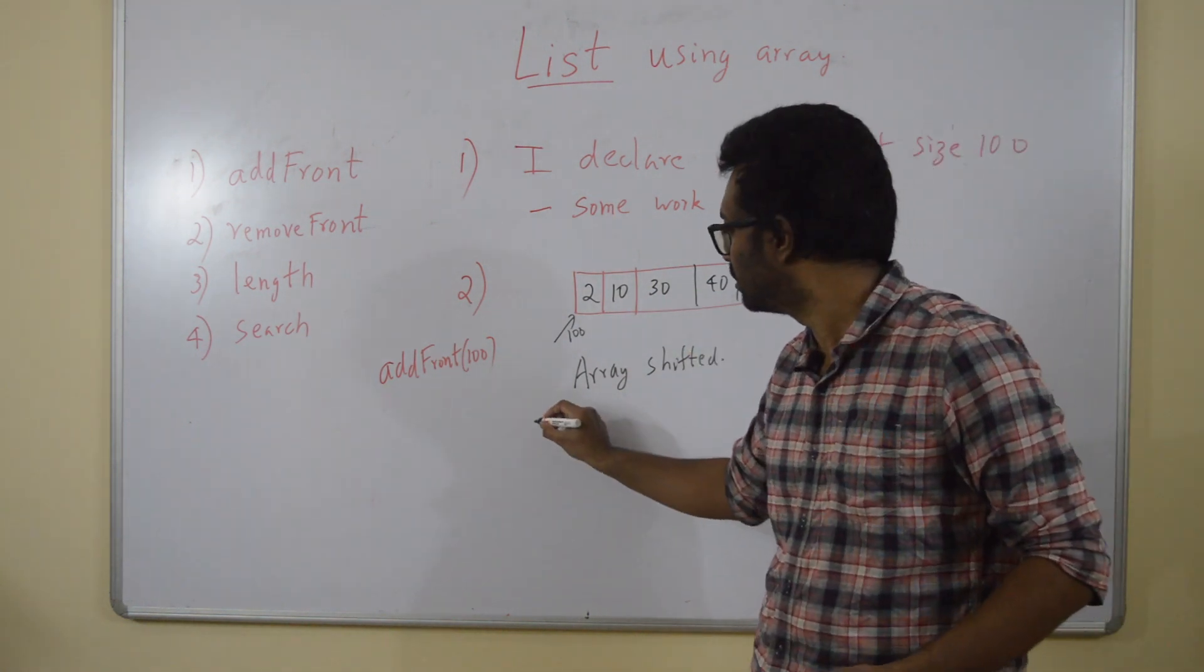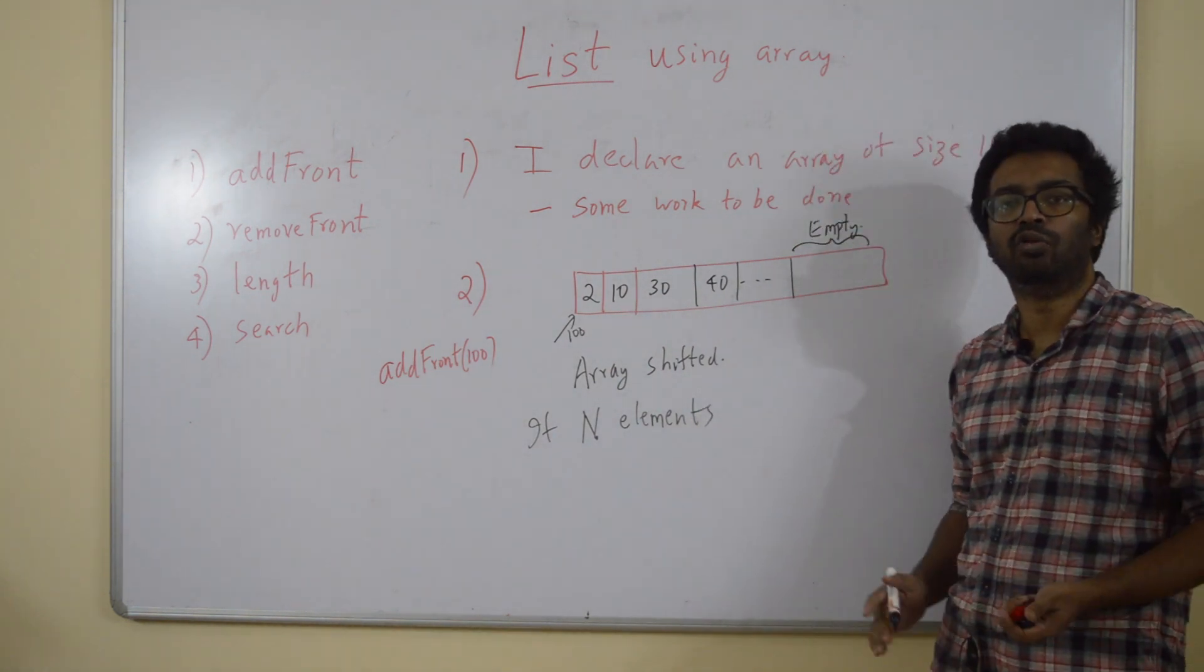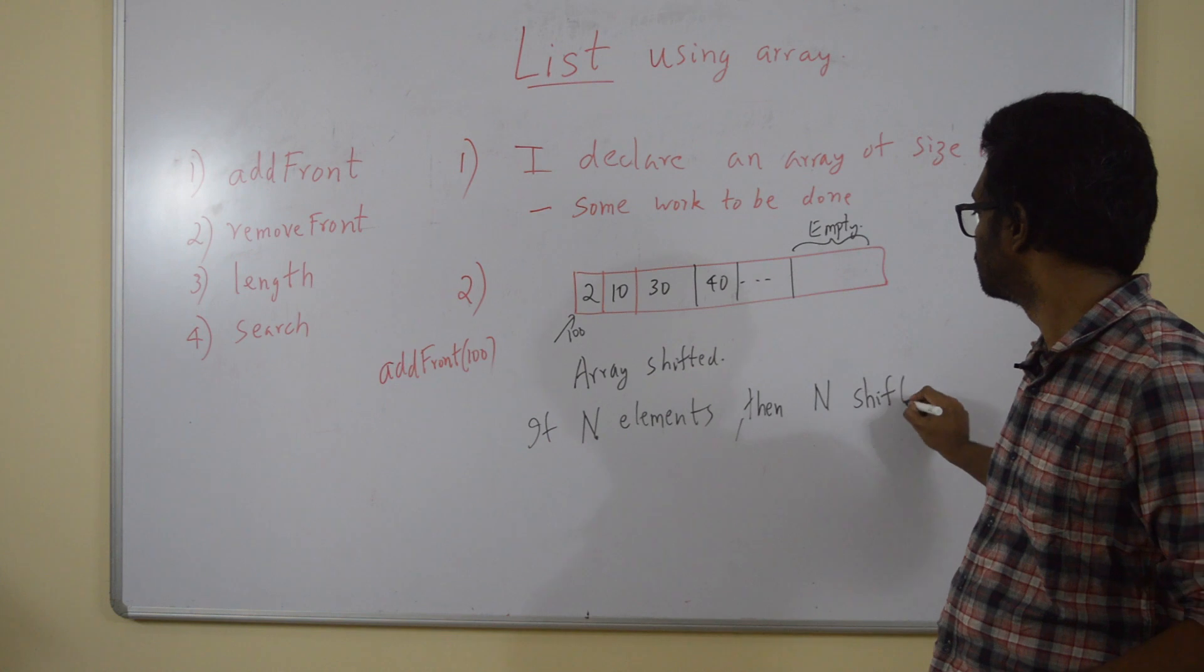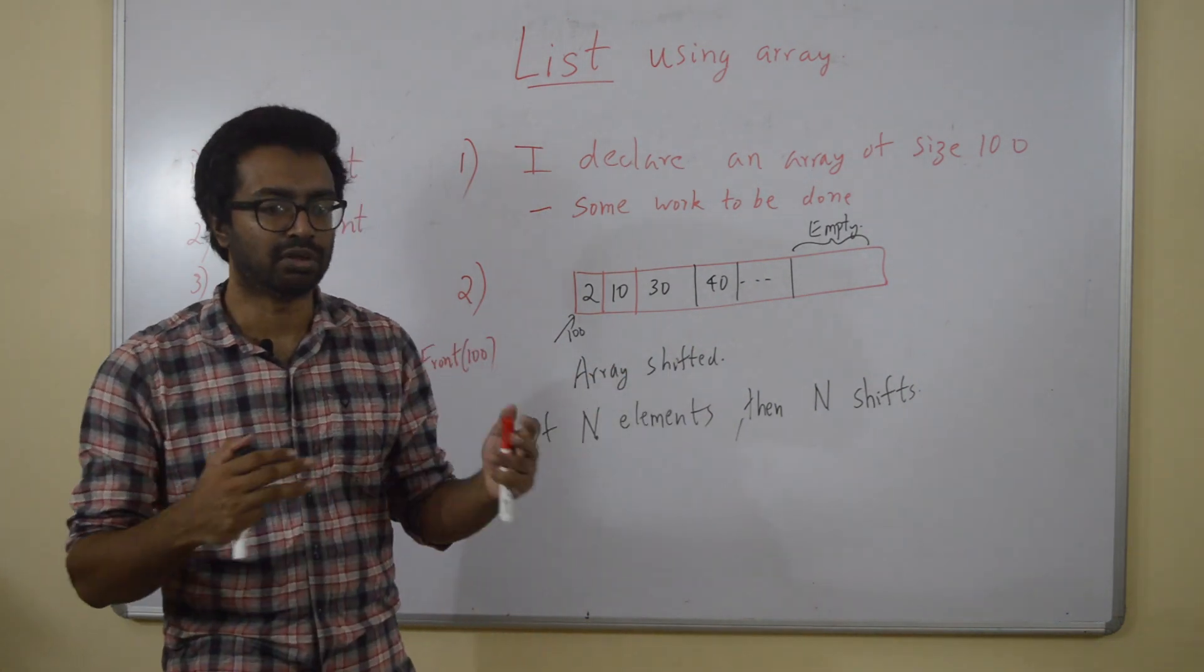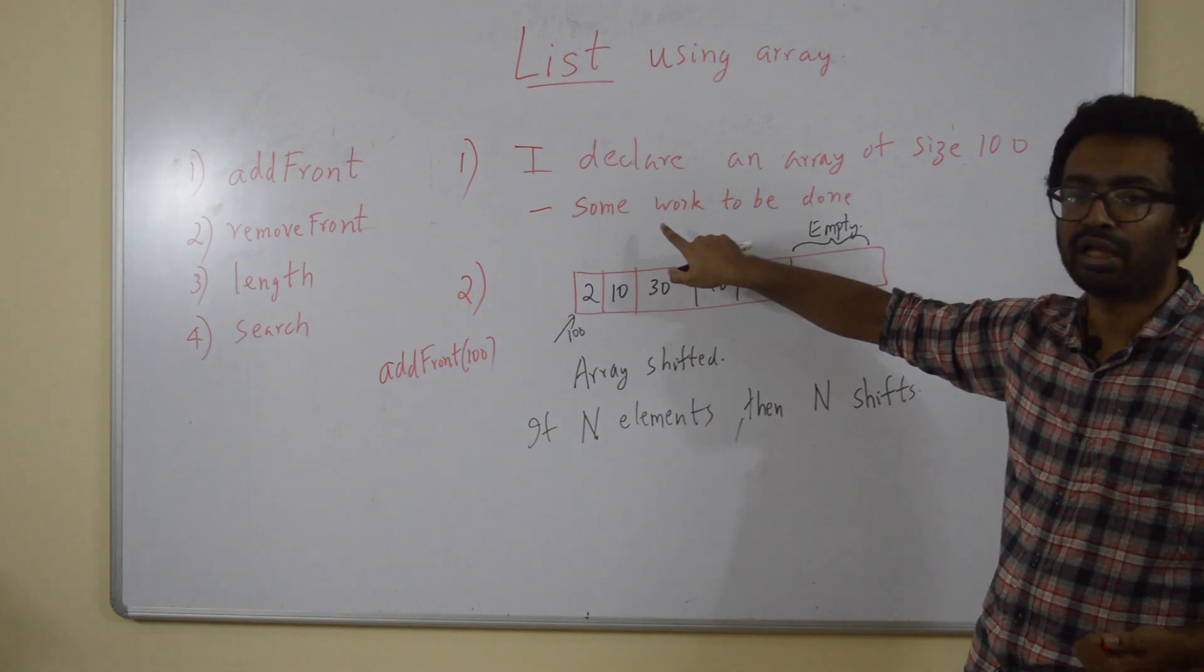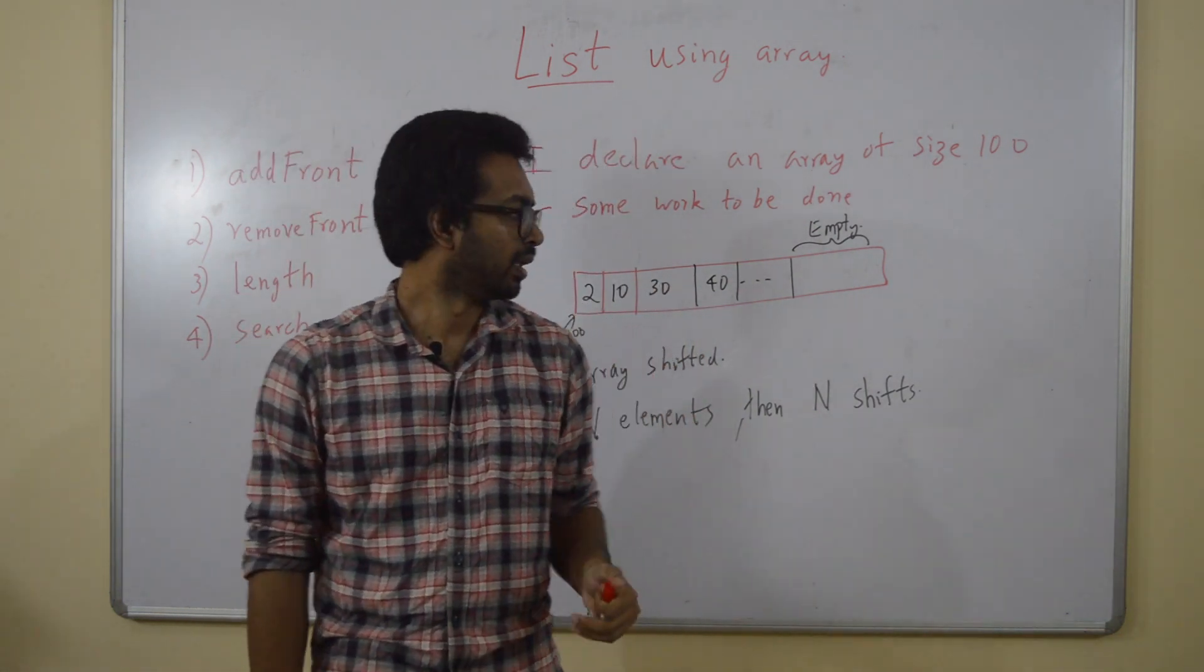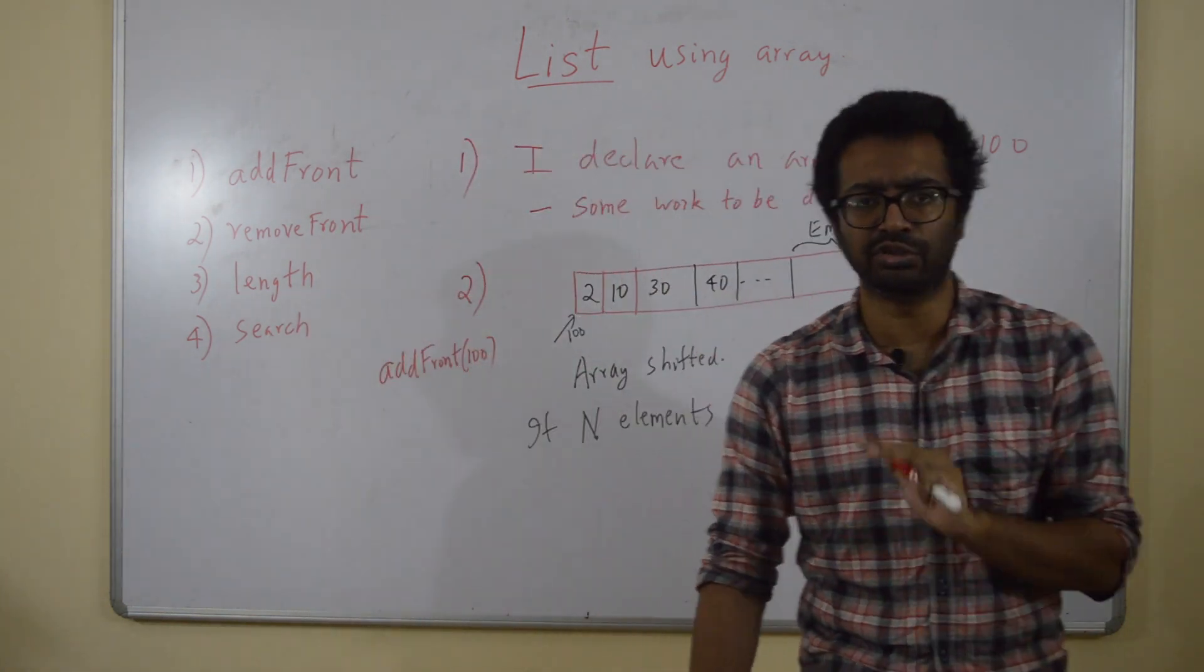You agree that the array has to be shifted? That means if there were n elements in the array, how many elements do you have to shift? You have to shift n elements. If n elements, then n shifts are required. If n is like large, 1 million, you have to do 1 million shifts to do this. If there is more work to be done there, that is going to take more time. This says that if n elements has to be inserted, you have to at least do n shifts. And that is an issue in this scenario.